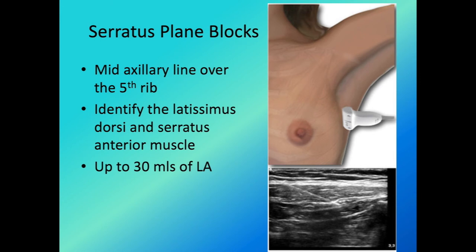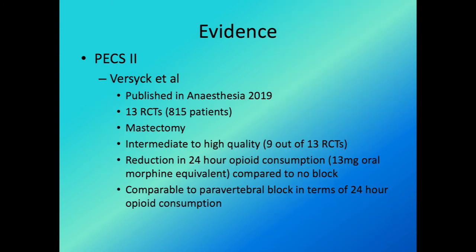For the serratus plane block, go to the mid-axillary line over the fourth or fifth rib, identify the latissimus dorsi and serratus anterior muscles, and inject up to 30 mL of LA. There are two descriptions: a superficial serratus plane block depositing LA between the latissimus dorsi and serratus anterior, and a deep serratus plane block depositing LA between the serratus anterior and the rib. It is unclear which is more efficacious — they appear similar.